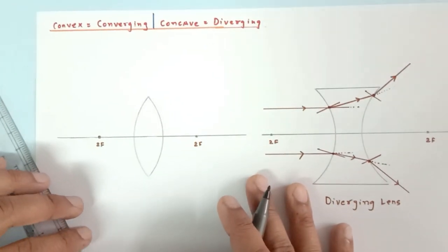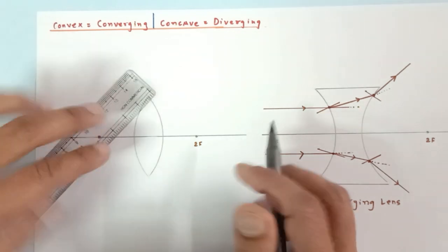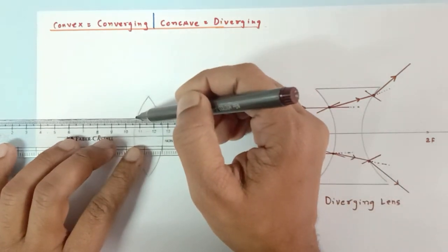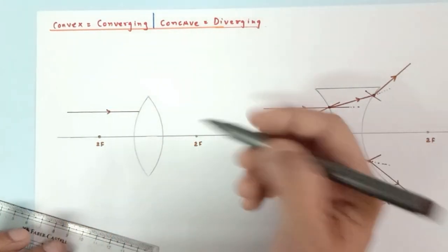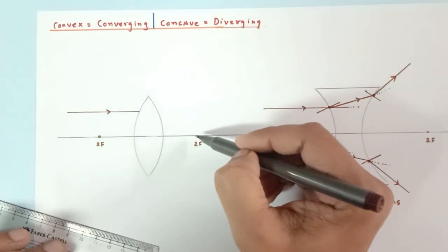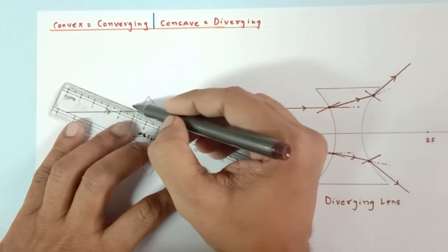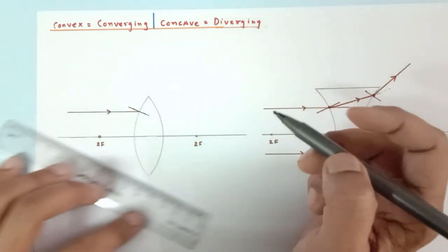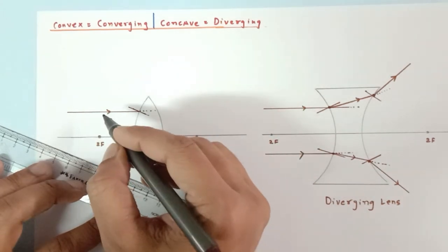Now let's do the same for the convex lens. This is the ray which is parallel to the principal axis. For this surface, if you complete the circle, this is the center of curvature. The normal always passes through the center of curvature — so if I extend this, the normal will pass through c. Instead of going straight, it will bend towards the normal because the ray is going from air to glass.